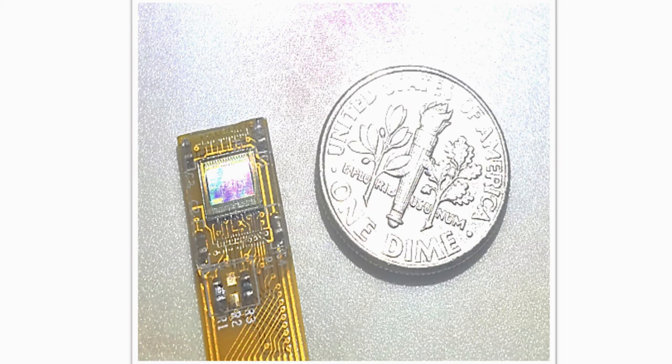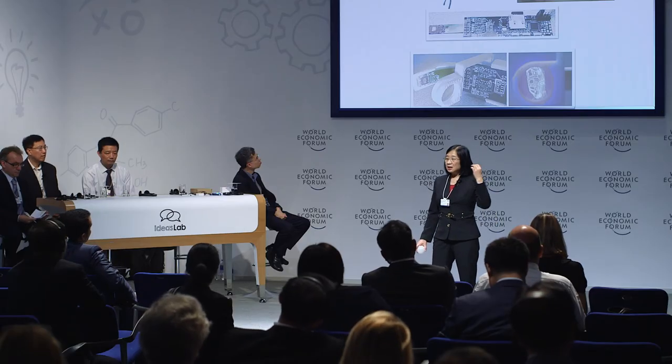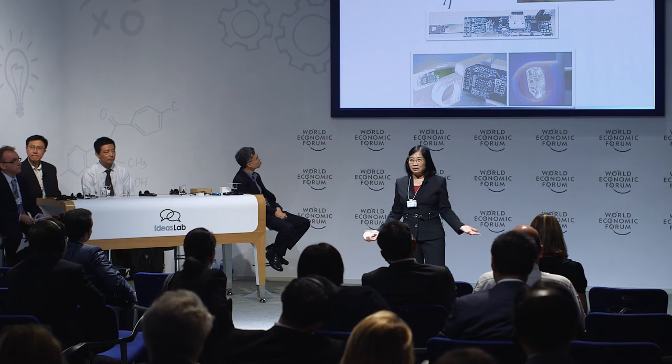What can you use a micro-display for? You can have additional 'eyes' anywhere. Connect this near-to-eye display to any camera — put a camera at your back, at home, or at work — and with the switch of a button you can see what is going on behind you or anywhere else. You can also watch very high-resolution video.